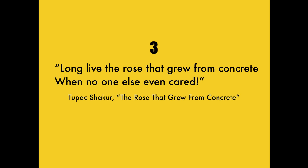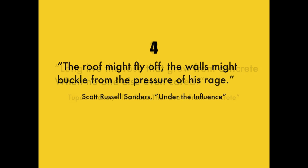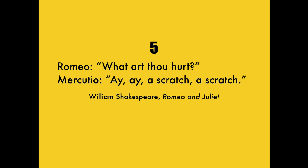Three: here's Tupac writing about a person who overcame hard times — long live the rose that grew from the concrete, when no one else even cared. Number four: the roof might fly off, the walls might buckle from the pressure of his rage. That's a man talking about his drunk, angry father — not a person with superpowers. Number five: Romeo questions his mortally wounded friend. What, art thou hurt? His friend knows he's going to die from this wound, but he says, aye, aye, a scratch, a scratch.